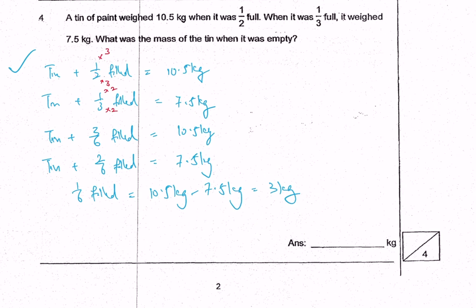So therefore, I will take tin, for it half filled, it means that it's 3 over 6, so it's 3 kg times 3 units equals to 10.5.